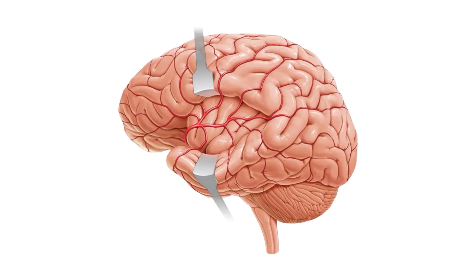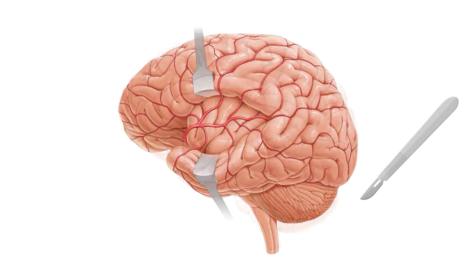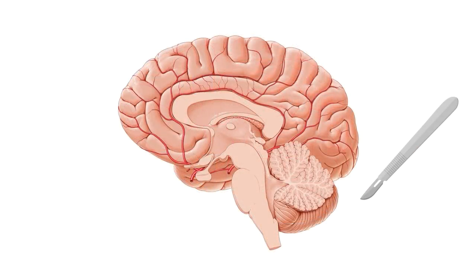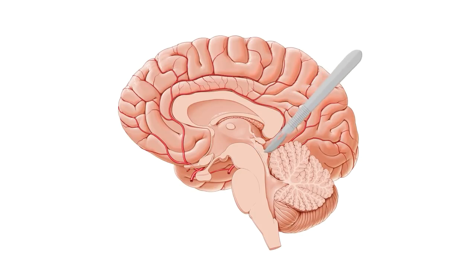So let's get familiar with these images before we go any further. Here we can see a lateral view of the brain in isolation, specifically we're looking at the brain from the left hand side. If we slice down the midline of our brain with a scalpel, we can see a medial view of the brain and its internal structures. We'll also cut away the brainstem and the cerebellum so that we can see the cerebrum on its own.